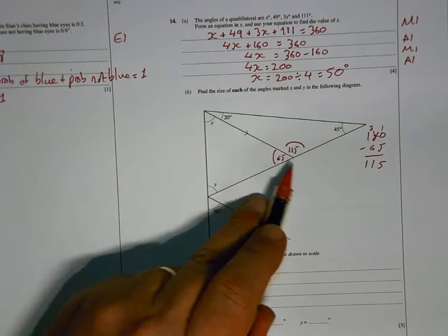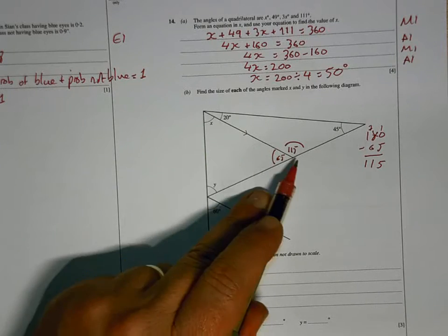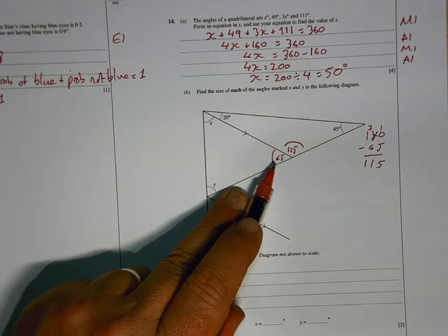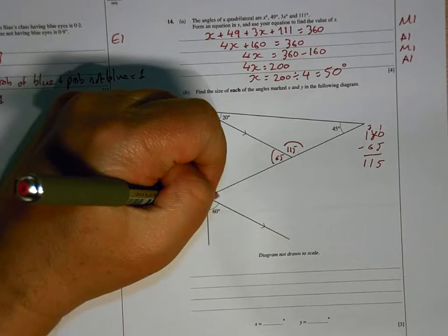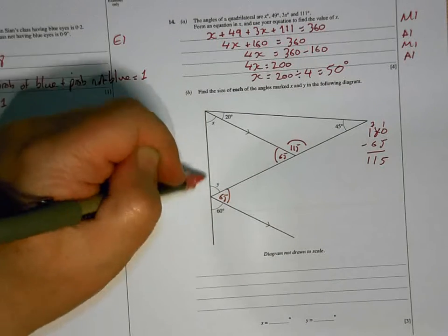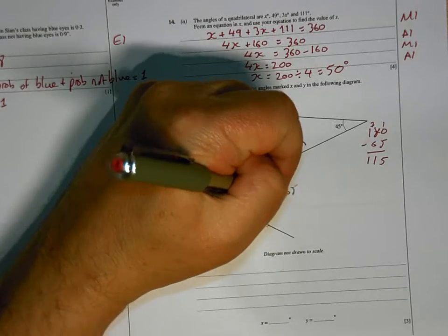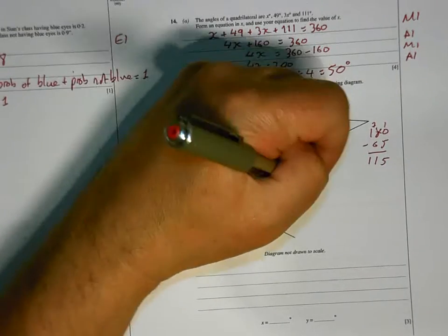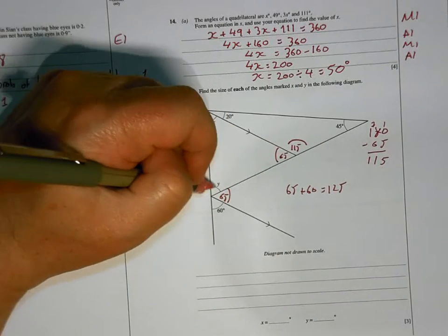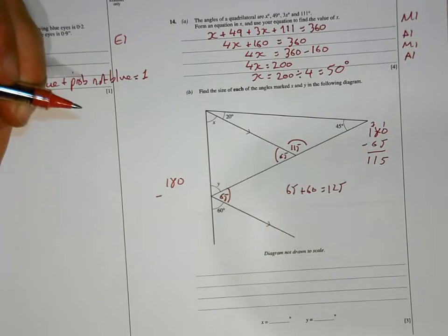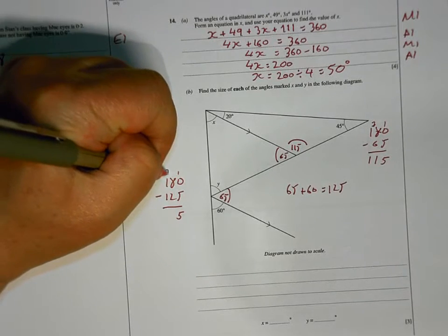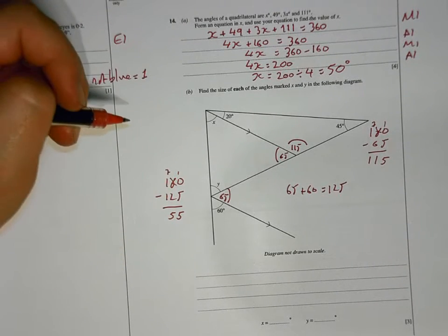Now, I've got here a parallel line. And within that parallel line, we've got this z angle, which means if that's 65, that's 65 there as well. If that's 65 and that's 60, I've got a straight line here. 65 add 60 is 125. So, those two come to 125. So, Y is going to be 180 take away 125, which is 55 degrees. So, Y is 55.